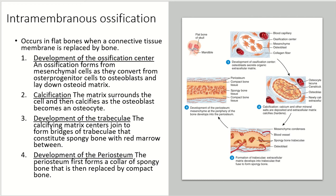The third step is the development of trabeculae, when the calcifying matrix center joins to form the bridges of those trabeculae, making spongy bone with red bone marrow in between. The fourth step is the development of the periosteum, which first forms as a collar of spongy bone and is then replaced by compact bone.